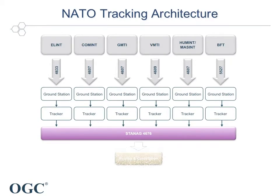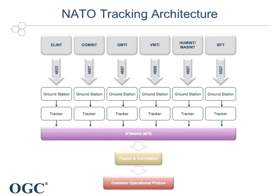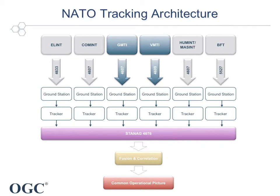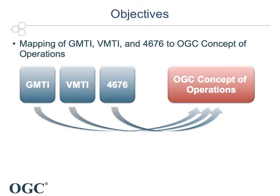The tracking architecture allows for fusion and correlation engines to generate a common operational picture in a multinational, multi-device, and multi-communication channel environment. In OWS8, we analyzed GMTI, Ground Moving Target Indicator Information, that is based on radar data, and VMTI, Visual Moving Target Indicator Information, based on motion imagery material. The objectives of this task include the mapping of GMTI, VMTI, and STANEX 4676 information models to OGC application schemas.